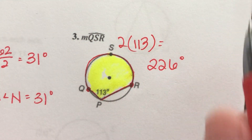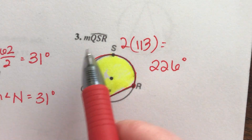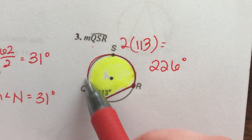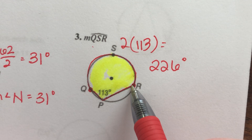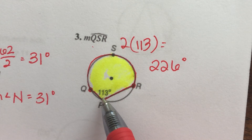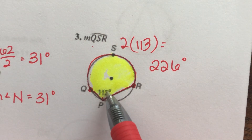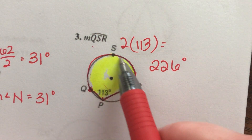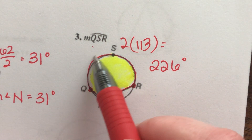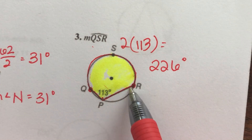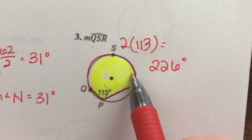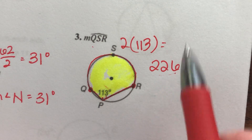The measure of arc QSR — this whole thing — is double the inscribed angle that creates it. The angle is half the arc; the arc is double the angle. Clearly the arc is a lot bigger than the angle. The angle is 113, so double it — you get 226.